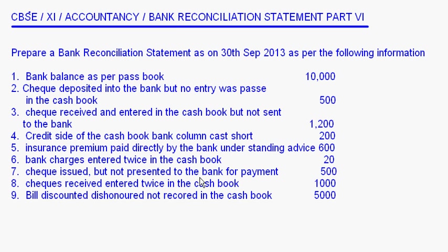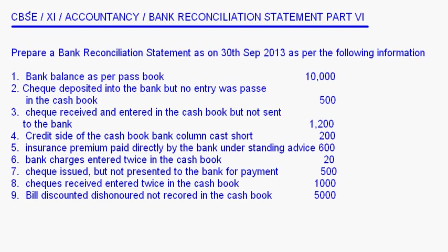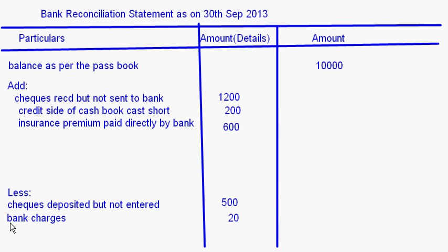Sixth: checks issued but not presented to the bank for payment. When you issue checks, it is deducted from the cash book, so the cash book balance decreases. But since they are not presented to the bank, the bank balance is still higher. The cash book balance is less, so it should be deducted. Checks issued but not presented: 500 rupees.